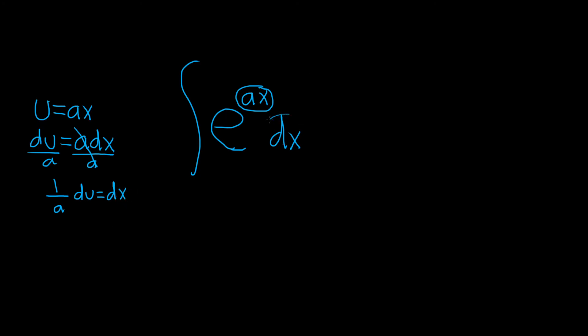Okay, so now we can replace dx with 1 over a, du. So this is 1 over a. We'll go ahead and pull it out. Integral of this. And then we're left with the e, and the ax was our u.